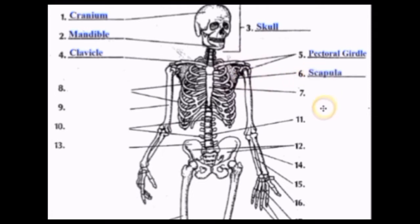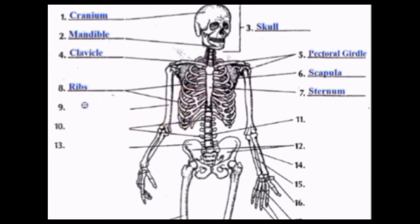The Scapula is the bone at the back of your shoulder. The Sternum connects the ribcage down the middle of your chest. Then we have the Ribs. The Humerus is your upper arm bone. And the Spine, which of course supports your spinal cord.